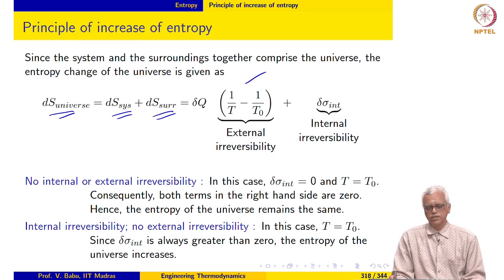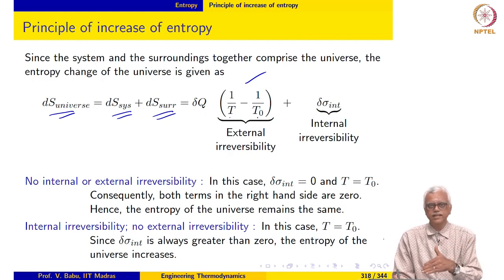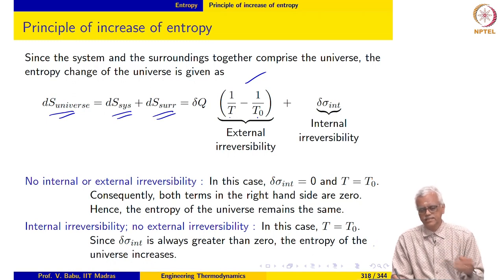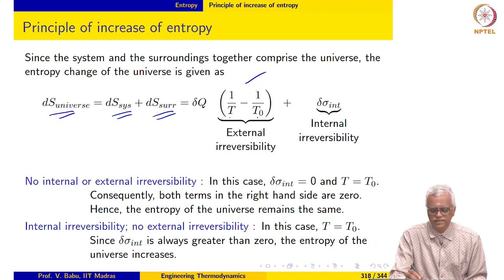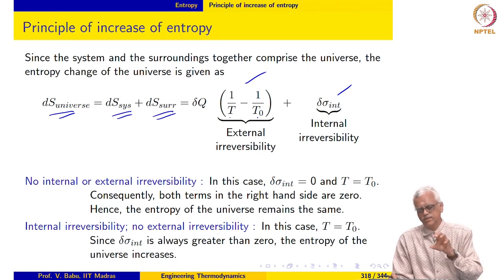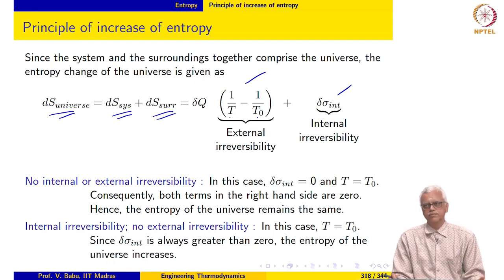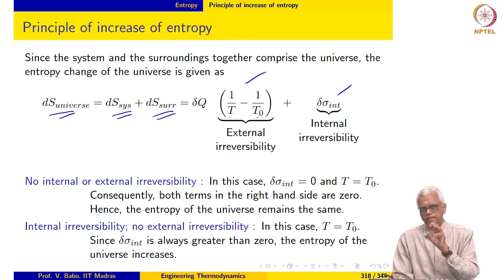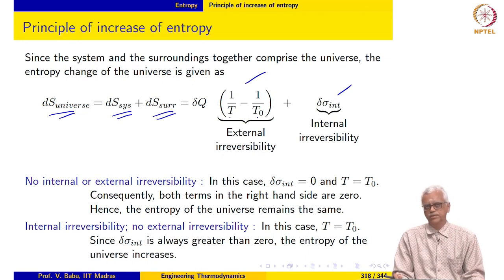The first term is due to external irreversibility — the system is at a different temperature from the surroundings when it rejects or receives heat. When rejecting heat, T is greater than T naught; when receiving heat, T is less than T naught. There is also entropy generation due to internal irreversibility. The entropy of the universe increases as a result of external plus internal irreversibility. If there are no irreversibilities, there is no change in the entropy of the universe.